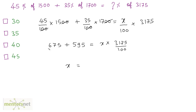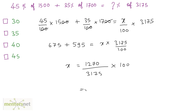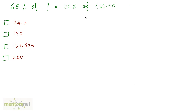So x is equal to 675 plus 595, which is 1270, divided by 3175, times 100. If you solve this, that comes out as 40. So the answer is option C.